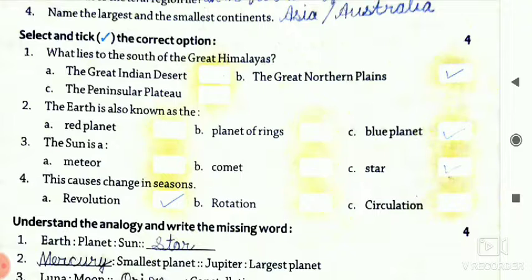Second is, the Earth is also known as the - first one is the red planet, second is planet of ring, and third one is your blue planet. So your answer is C, blue planet.